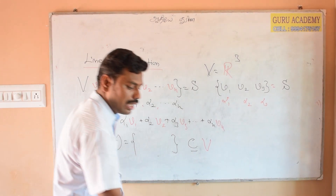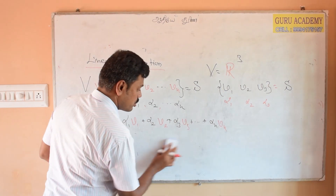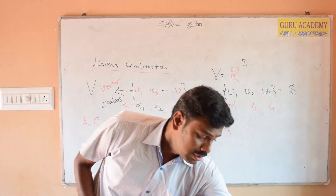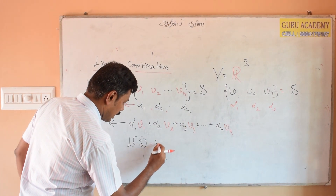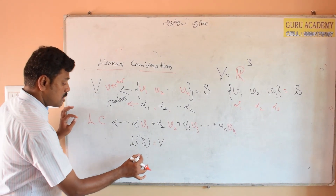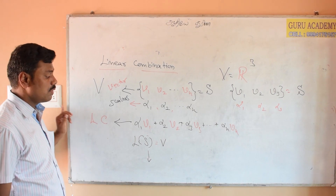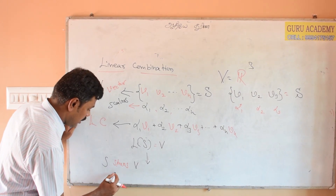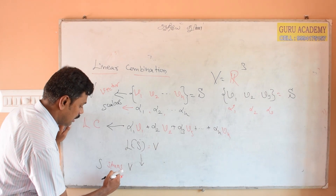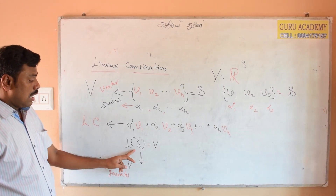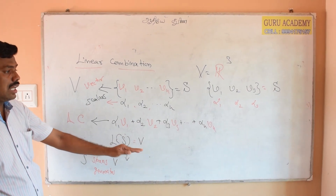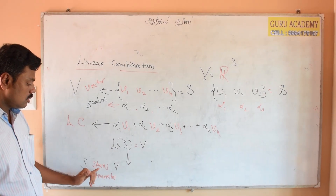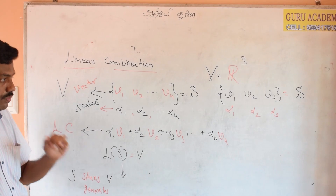V1 is in the span of S. The span of S, denoted L(S) or N(S), is equal to V. When the span of S equals V, we say S is a spanning set or generating set. In other words, S spans V, or S generates V.